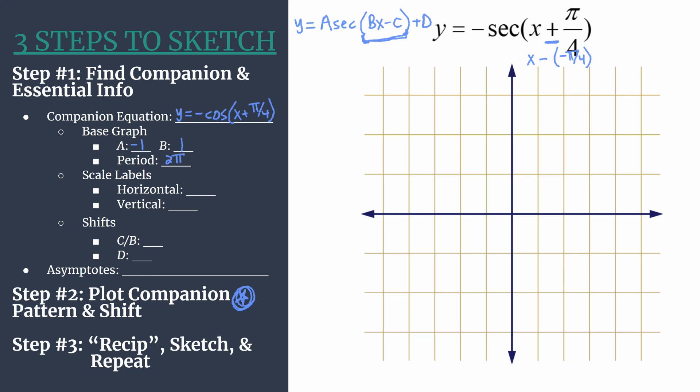Now that we have that basic information, let's go ahead and decide on how to label our axes. So an easy way to get a good horizontal axis scale is to take your period and divide by 4. And this ensures that your companion pattern in step 2, before you shift, will align nicely with your horizontal tick marks. So that's why I choose to do it this way.